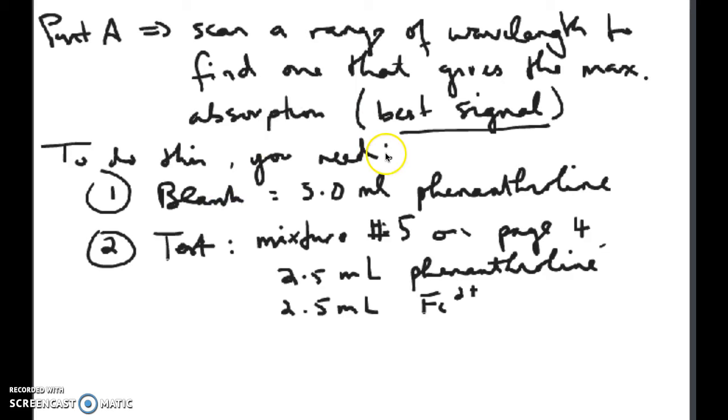Then go to the next wavelength, put the blank in again, zero it, take the blank out, put the test solution in, and read the absorbance at that wavelength. Do that for the whole range of wavelengths that the lab procedure tells you to do. Whichever wavelength gives you the highest absorbance is the wavelength you want to use for the rest of your measurements in Part B.